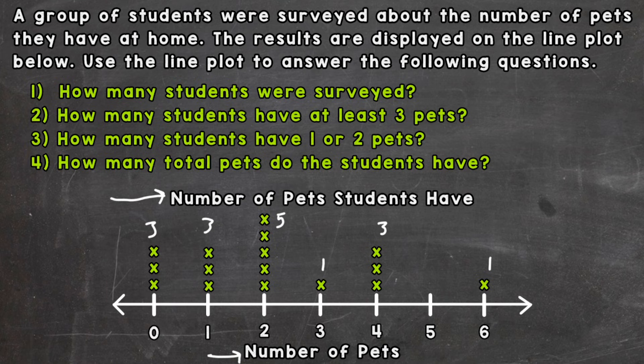So how many total students is that? Well, three plus three is six. Plus five is 11. Plus one is 12. Plus three is 15. Plus one is 16. So how many students? Well, 16 students. We counted the total number of x's. And remember, each x represents a student that was part of that survey.